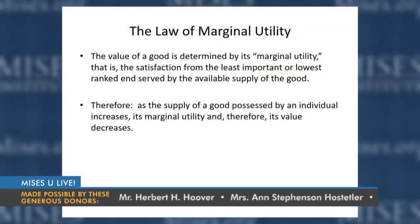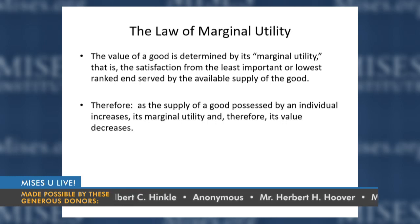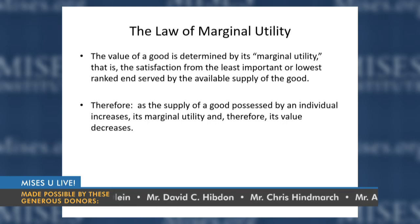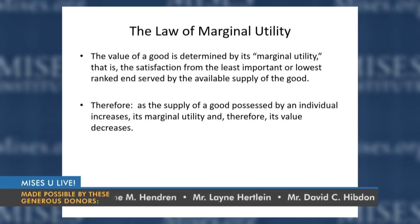The law of marginal utility: the value of a good is determined by its marginal utility — simply, the satisfaction from the least important or lowest-ranked end served by the available supply of the good. Utility is another word for satisfaction; marginal means the relevant unit. As an individual's supply of a given good increases, the value of each individual unit falls. The greater the increase in supply, the lower the marginal utility and therefore the lower the value.